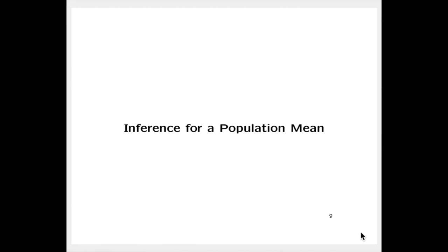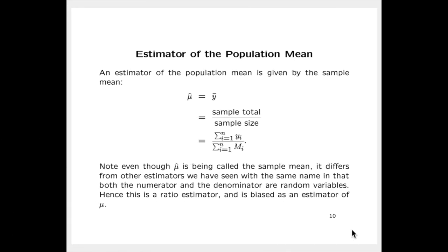Now let's look at inferences for a population mean using a cluster random sample. An estimator of the population mean is given by the sample mean, denoted mu-hat, which equals y-bar. In words, y-bar is equal to the sample total divided by the sample size. The sample total is the sum of y sub i's from i equals 1 to little n — that is, the sum of the cluster totals for the clusters selected for the sample — divided by the sum of the cap M sub i's.